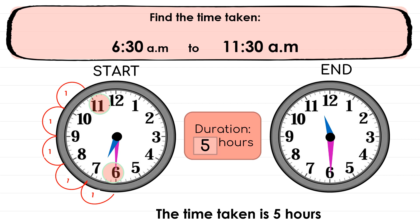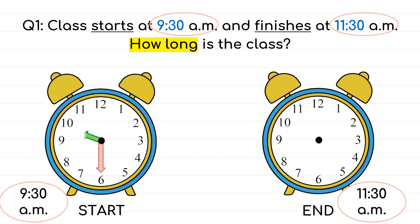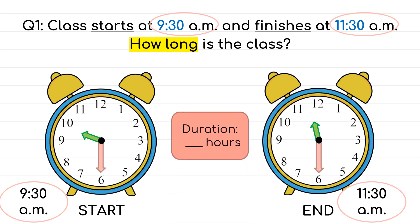Another example — class starts at 9:30 AM and finishes at 11:30 AM. How long is the class? It starts at 9:30 and finishes at 11:30. As you can see, only the short hand changes, from 9 to 11. One jump is one hour, so 9 to 10 is one hour and 10 to 11 is one hour. There are two jumps, so 1 plus 1 equals two hours. The class takes two hours.